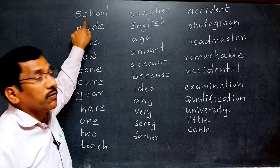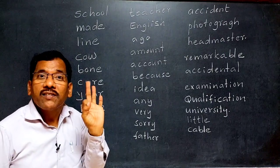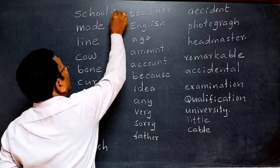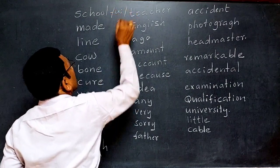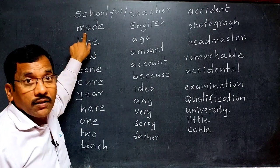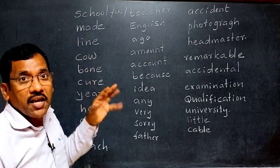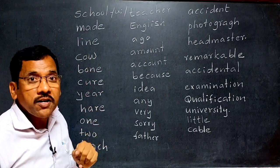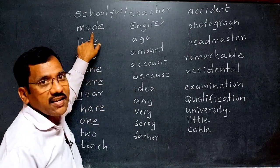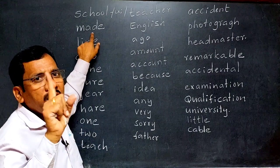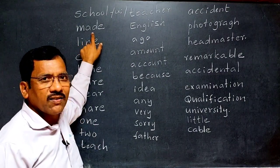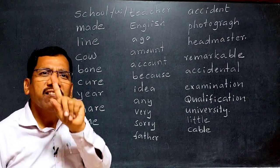Take the word 'school.' It has one long vowel sound — a monophthong. So 'school' is a word of one syllable. Remember: one diphthong is also equal to one syllable. So any word with only one vowel sound has one syllable.